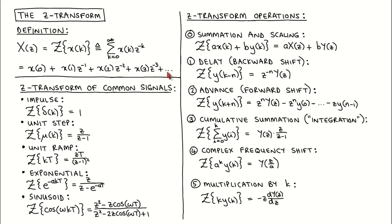The Z-Transform is a one-sided transform. The signal values for negative time indices are ignored. The signal values for non-negative time indices can always be recovered from the Z-Transform. Let's now look at the Z-Transform of a number of common discrete time signals. These and several others are usually given in Z-Transform tables.